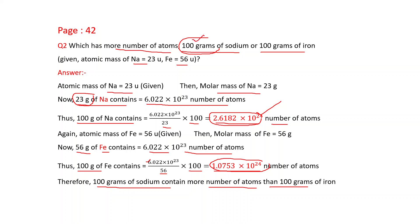You can also find the answer without full calculation: since the mass of both samples is the same (100 g) and the molar mass of sodium (23) is less than that of iron (56), sodium will have more moles and therefore more atoms. Thank you.